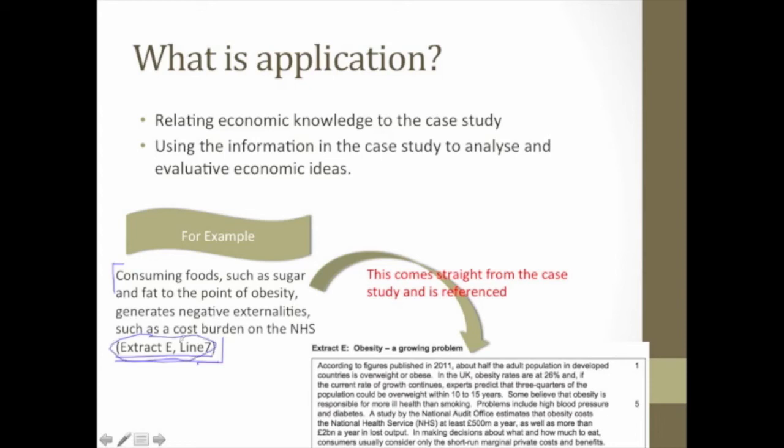So let's go to the case study here. I've got it down the bottom, extract E, line 7. A study by the National Audit Office estimates that obesity costs the National Health Service at least 500 million a year, and a cost burden on the NHS. That's what I've said, that's what they've said, and that is an example of application.